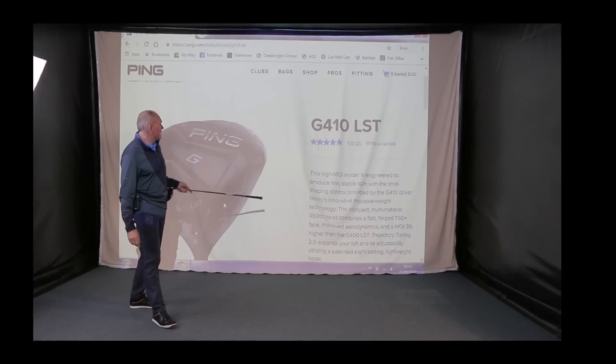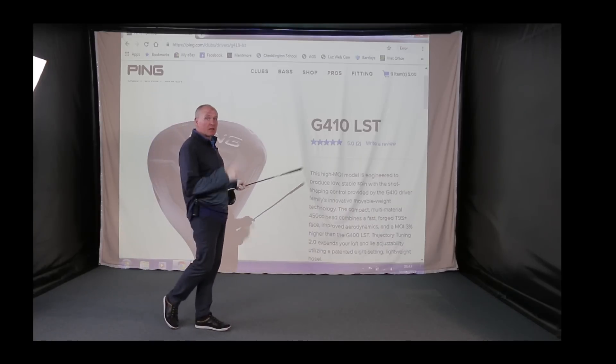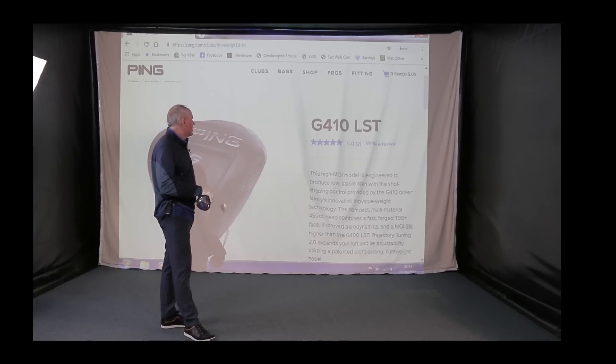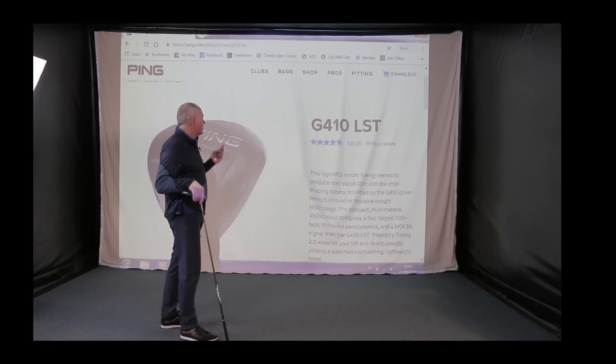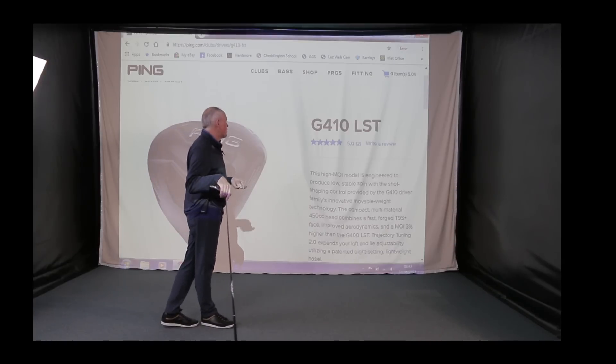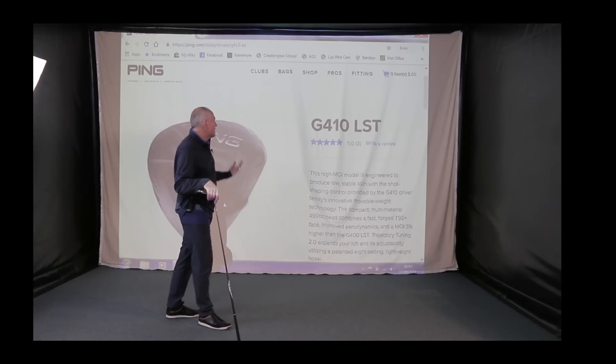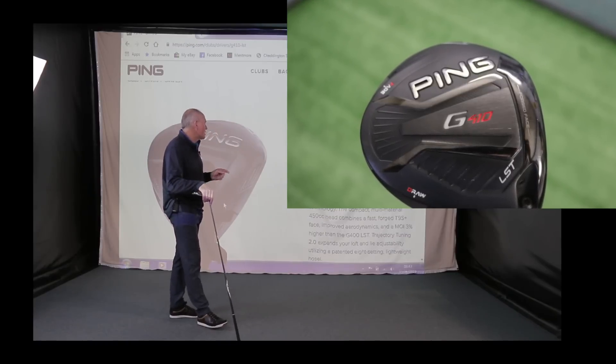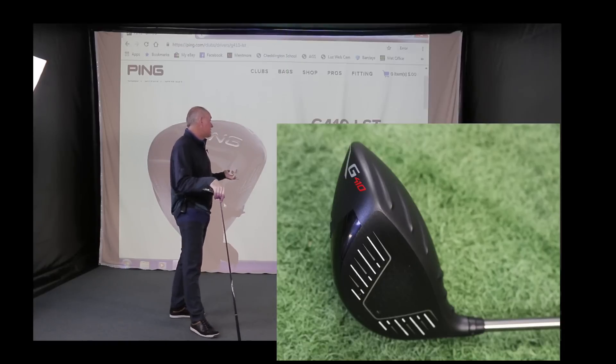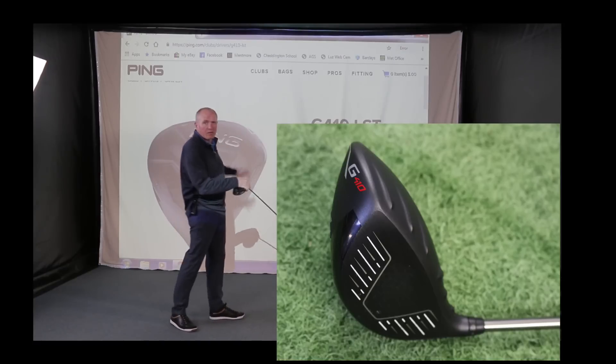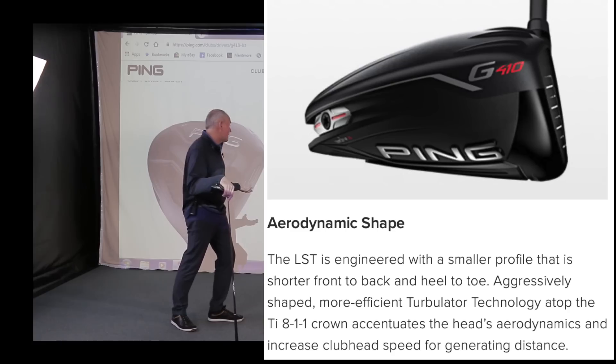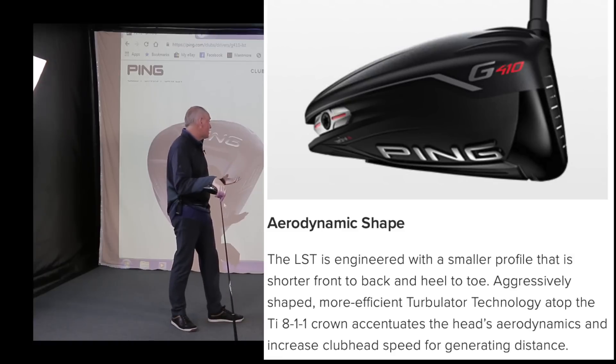Anyway, let's tell you a little bit about the G410 LST. Straight off the Ping website here, it's a high MOI - MOI standing for Moment of Inertia - resistance to twisting is probably a good way to think of MOI. Engineered to produce low, stable spin with shot-shaping control, provided by the G410 driver's family innovative movable weight technology, compact multi-material 450cc head. Again, all of this we're saying about the G410 range across the board: fast forged T9S+, improved aerodynamics, MOI 3% higher than the G400 LST.